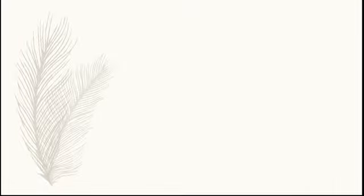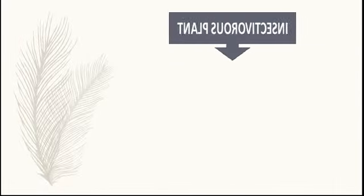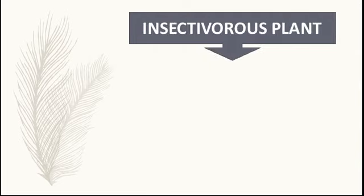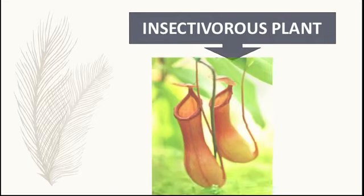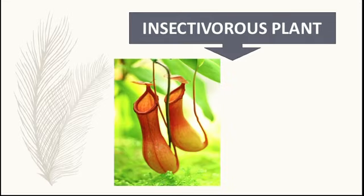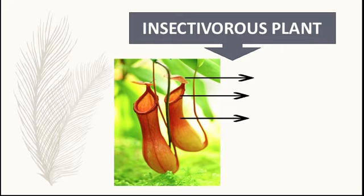Insectivorous plants have special structures to trap and digest insects. For example, the pitcher plant. The pitcher plant has a pitcher — a pot-like structure with a flap. The flap produces nectar that attracts insects. The rim of the pitcher is slippery, so the insect slips inside. The pitcher is deep and the inside wall is difficult to climb, so insects drown and dissolve in the liquid present inside.